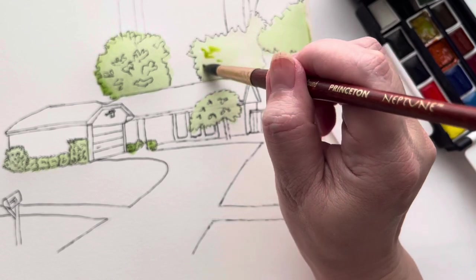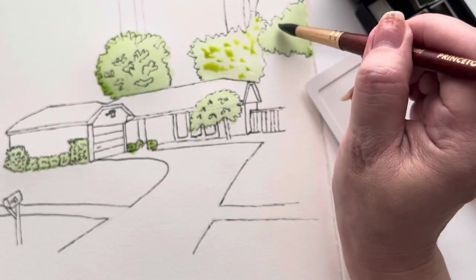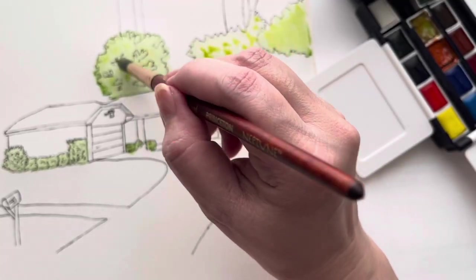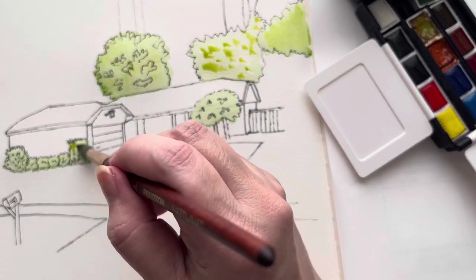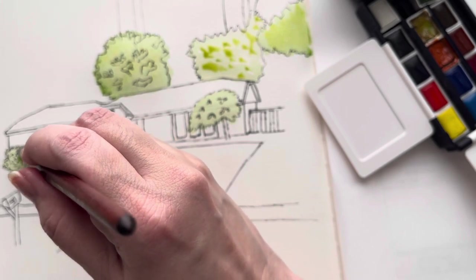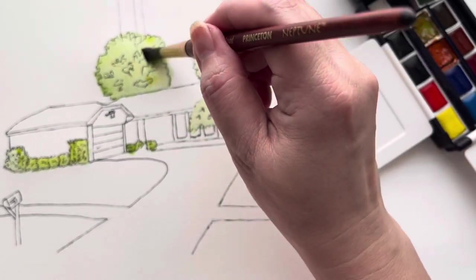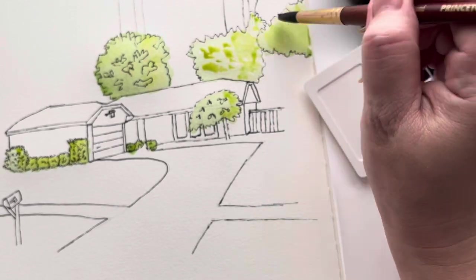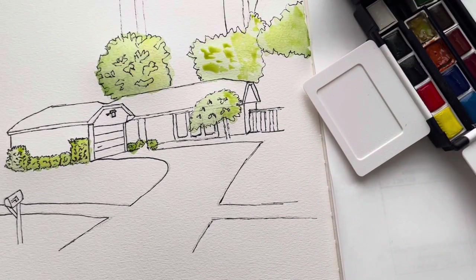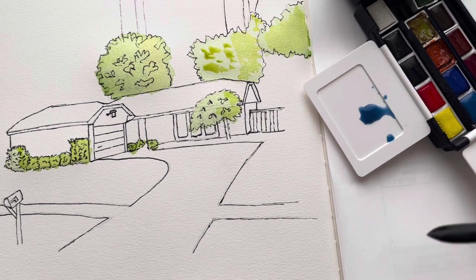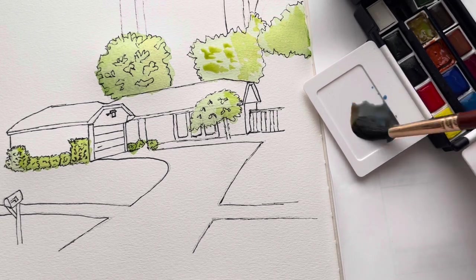Now I'm trying to go in with my second layer. I've mixed in one of the darker yellows with the sap green to add some shading to these bushes and also some sunlight, maybe some yellow sun coming in on these sides here.